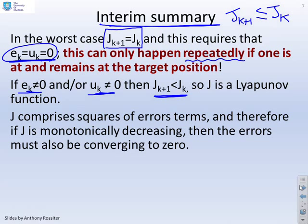J comprises squares of error terms, and therefore, if J is monotonically decreasing, then the errors must also be converging to 0.